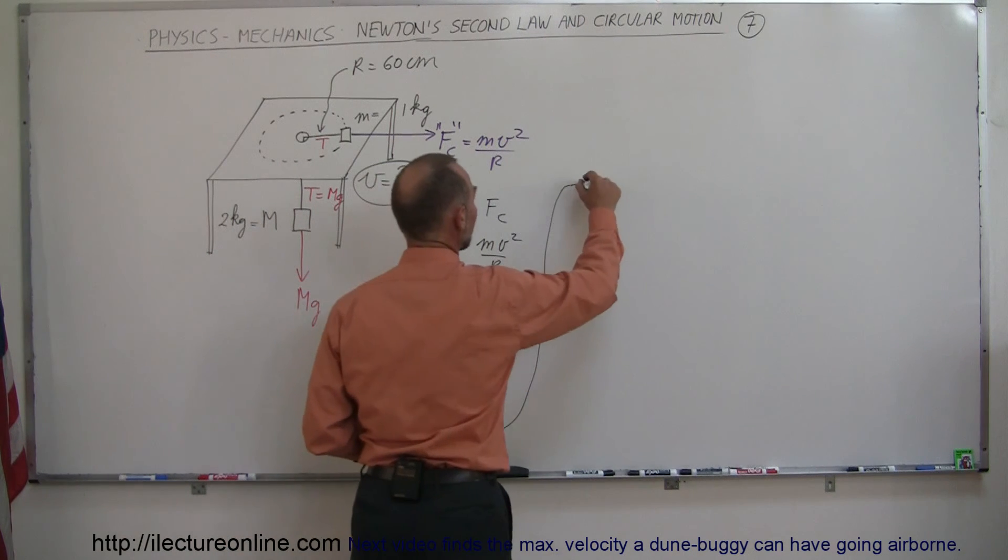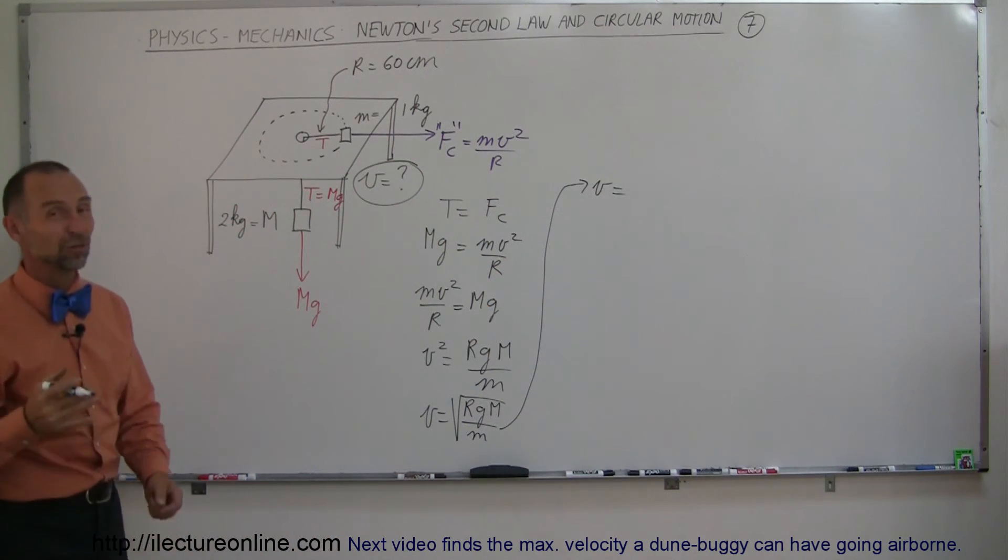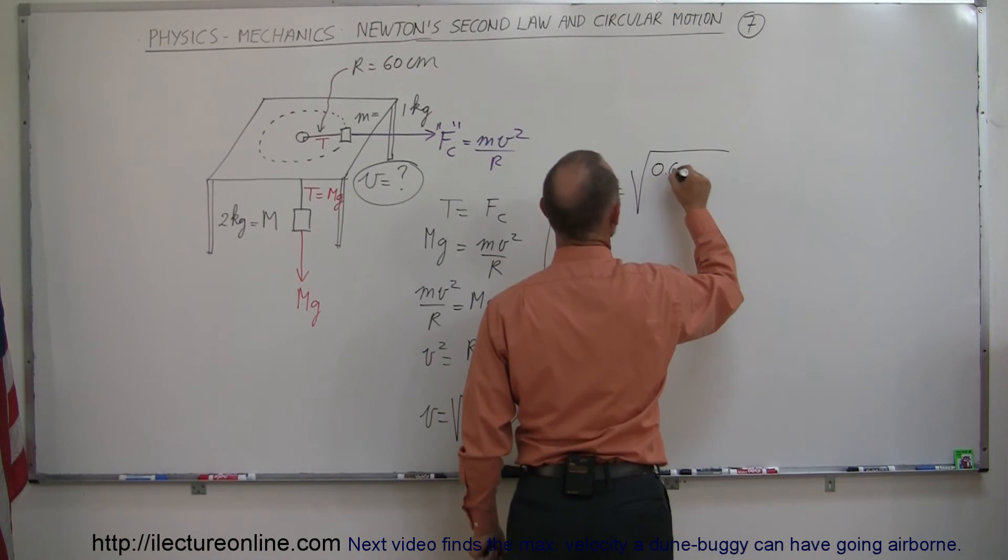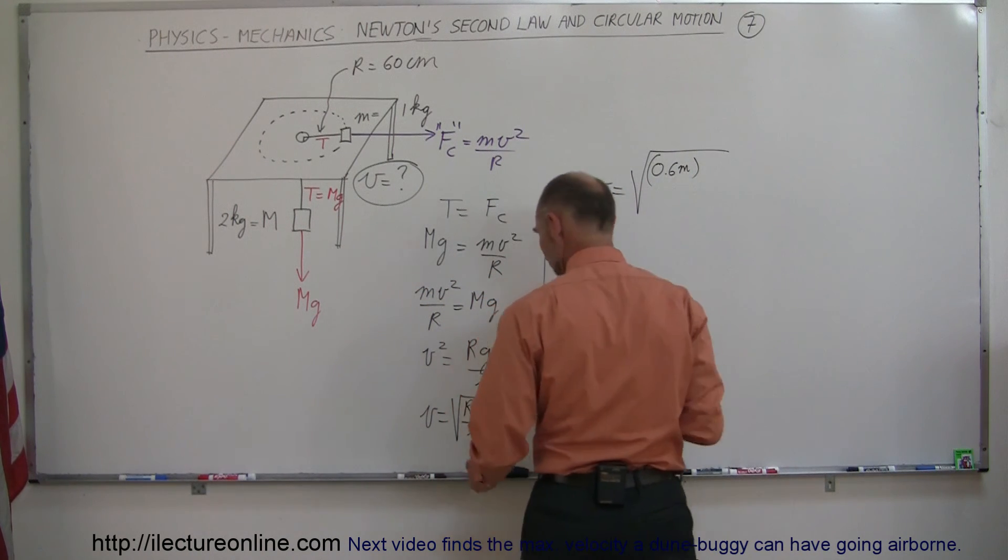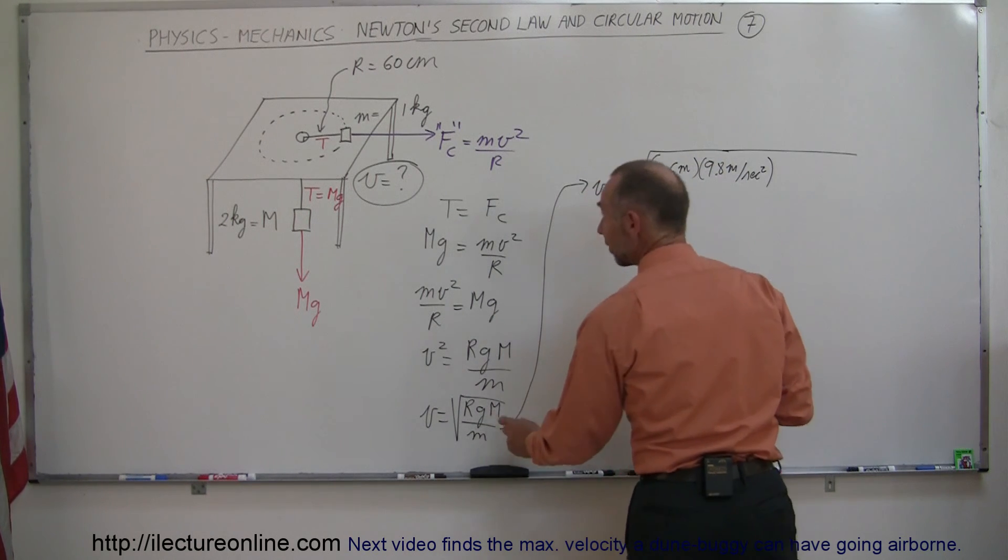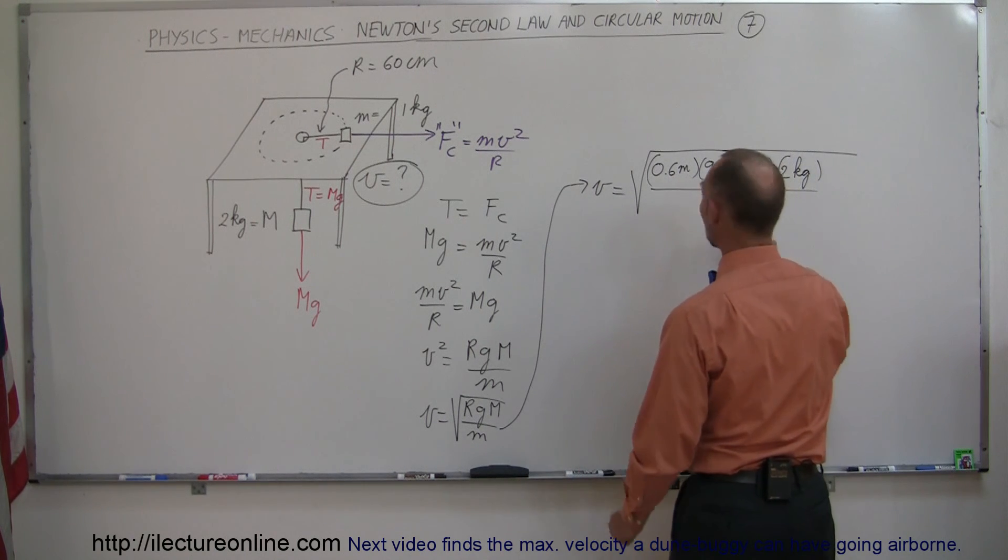And all we have to do is plug in the numbers and see what we get. So in this case the radius is 60 centimeters which is 0.6 meters, square root of 0.6 meters. G that is 9.8 meters per second squared. Big mass is 2 kilograms and small mass is 1 kilogram.